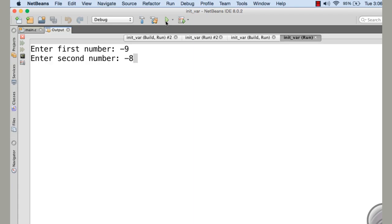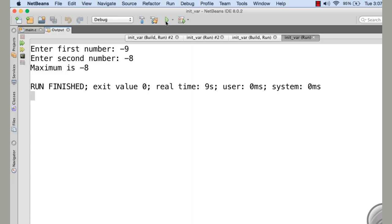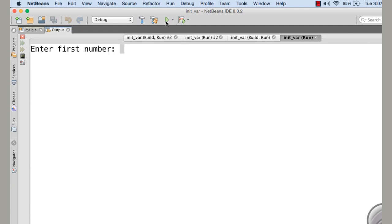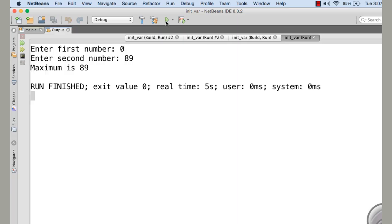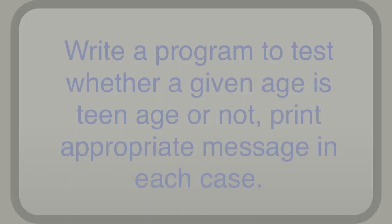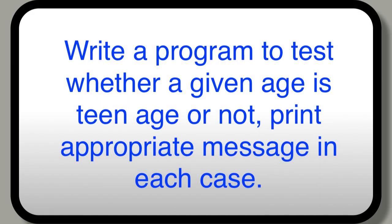Let me execute the program to show you the result. It is asking for the first number — I am giving 34. It is asking for the second number — I am giving 90. So the maximum is 90. It is working fine. Now I give minus 9 as the first number and minus 8 as the second — minus 8 is greater than minus 9, so the maximum is minus 8. I execute once more with 0 and 89; the maximum is 89.